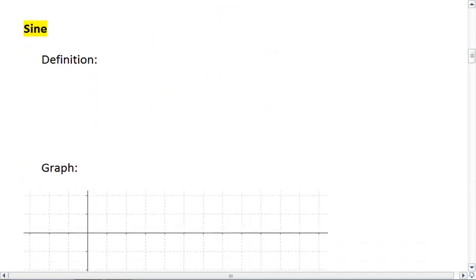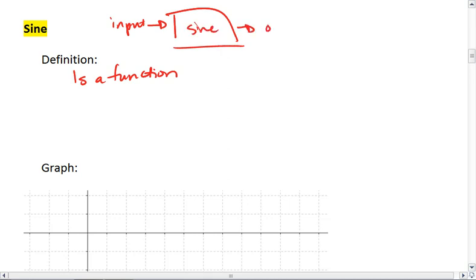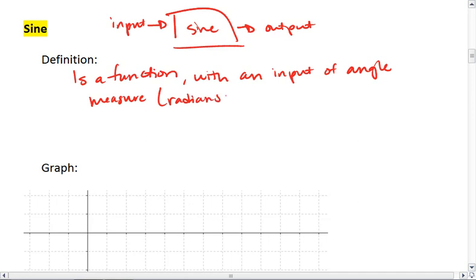Let's look at some definitions then. Sine. What sine is, is sine is a function. Remember, a function takes an input, puts it in our magic black box, and gives us an output. For sine, sine is a function with an input of angle measure, and this can be in either radians or degrees.